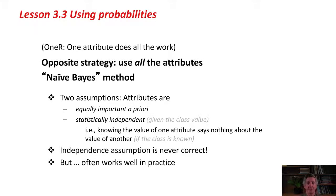There are two assumptions that underlie Naive Bayes. The attributes are equally important, and that they're statistically independent. That is, knowing the value of one of the attributes doesn't tell you anything about the value of any of the other attributes. This independence assumption is never actually correct, but the method based on it often works well in practice.